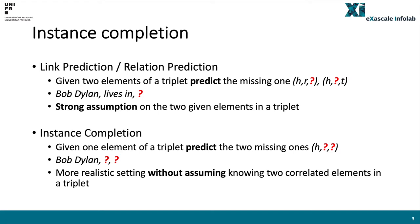Against this background, this paper studies an instance completion task, suggesting relation-tail pairs for a given head. Different from the link prediction task, our instance completion task has a more realistic setting without assuming knowing two correlated elements in a triplet. Following the previous example, given the head entity Bob Dylan, predict the relation-tail pairs.